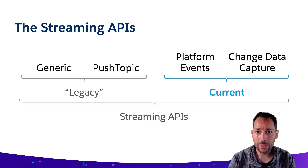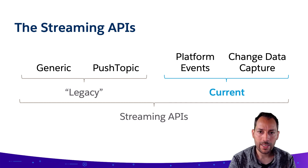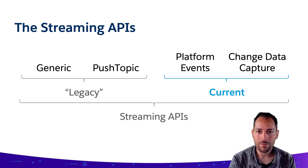Before we jump into the technical details of what the PubSub API is, let me give you a refresher on the streaming APIs. The streaming APIs regroup four different types of events. They're divided into two categories: legacy events and more modern events. On the legacy side we have generic and push topic, which are no longer being actively developed. The modern events are platform events and change data capture events.